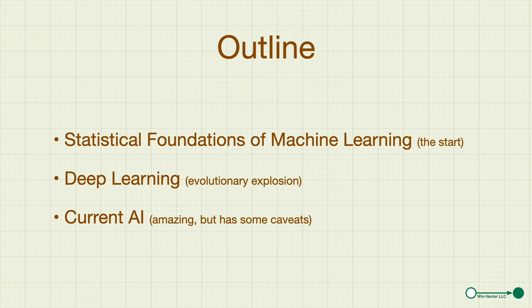The outline I've settled on is: I'm going to go over the statistical foundations of machine learning — this is where statistics and machine learning were very dominant for quite a while in the field. Then I'll go to deep learning, the neural net topic, and I'll get to what currently is going on in AI.